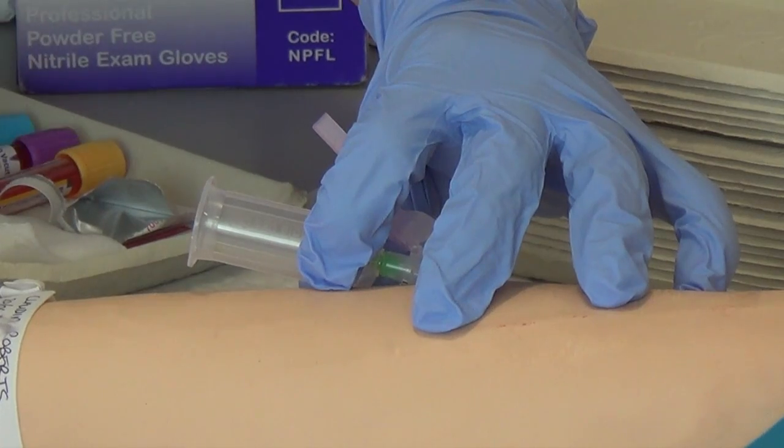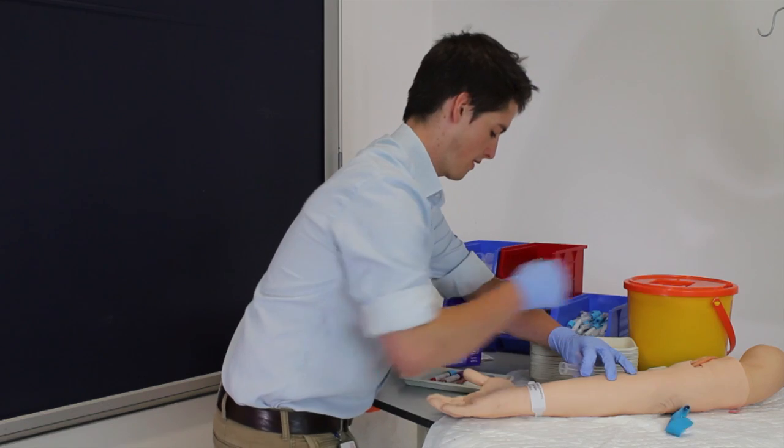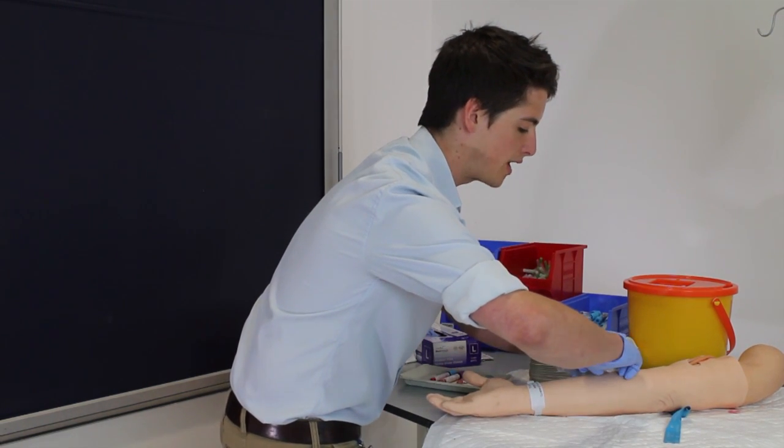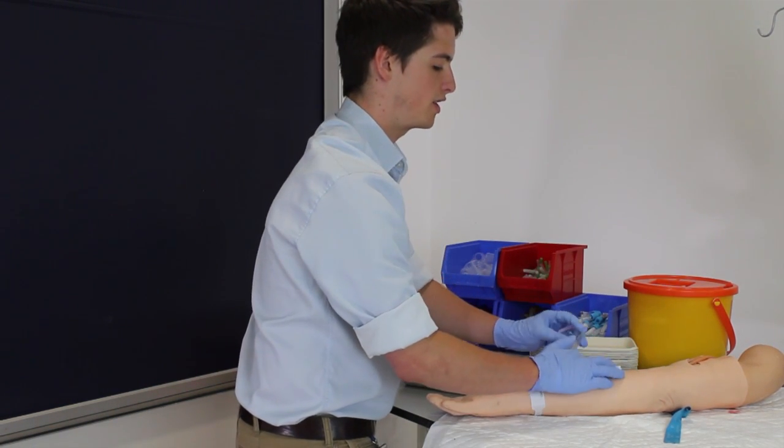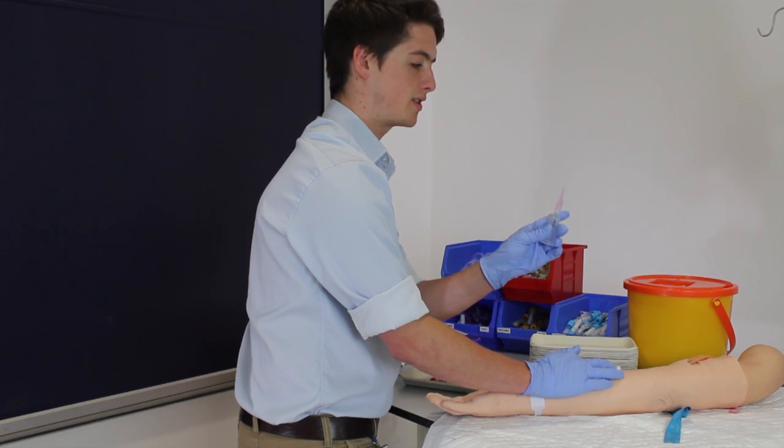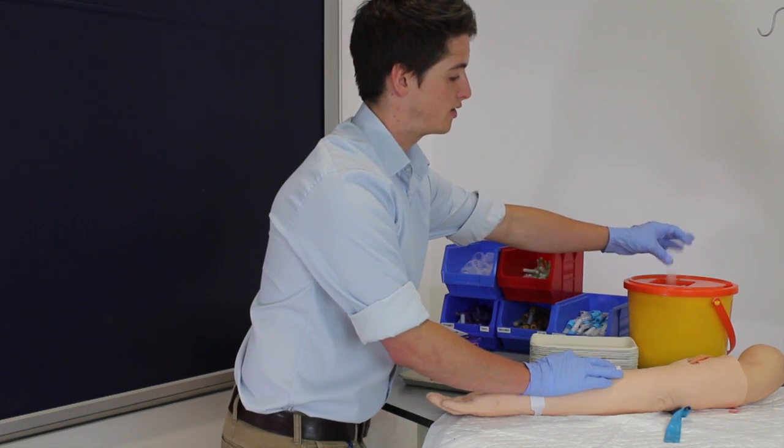Now that you've taken the blood that you need, you can remove the tourniquet. Take your gauze to cover the area, and then applying pressure with the gauze, gently remove the needle. At this point you can put the needle cap into place just by clicking it like that, which makes it safe and easy to dispose of, and then place that into the sharps bin.